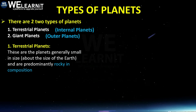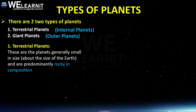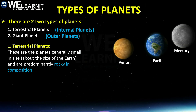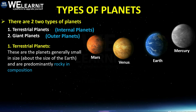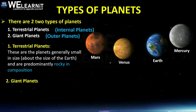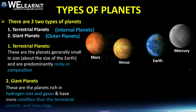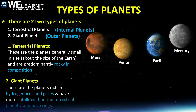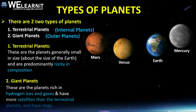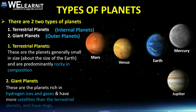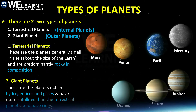Terrestrial planets are generally small in size — about the size of the Earth — and predominantly rocky in composition. Those terrestrial planets are Mercury, Earth, Venus, and Mars. Giant planets, or gas planets, are rich in hydrogen, ices, and gases, have more satellites than terrestrial planets, and also have more rings. These are Jupiter, Saturn, Uranus, and Neptune.